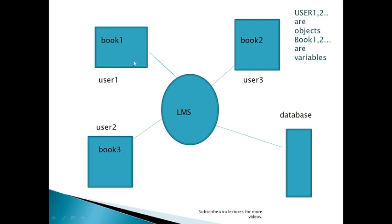Two objects communicate by passing parameters — we pass parameters so the method can communicate with another. By passing the parameters, objects communicate with one another. Here, we will free Book1. If User1's Book1 is not freed, then User3 will not be affected. When one object is changed, the other object will not be affected. If two objects want to communicate with one another, they will do so by passing the parameters.